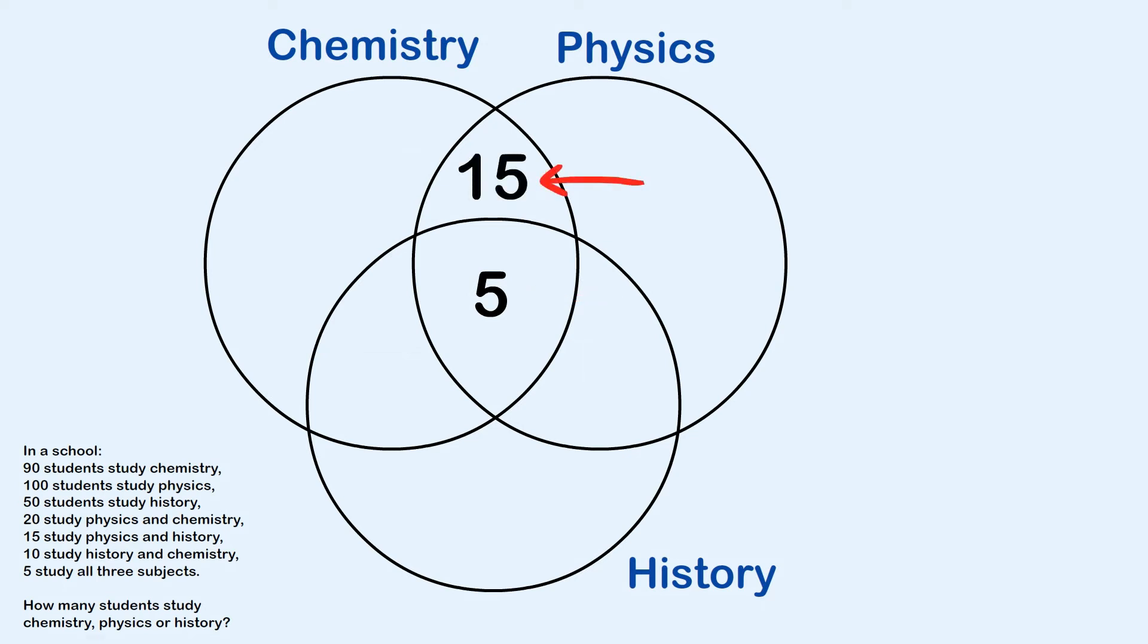And if we follow the same line of thinking, we have to put five here and 10 here. Now let's try and fill up the rest of chemistry. We know that there are 90 students that study chemistry, and we've already accounted here for 15 plus 5 plus 5, so that's 25. So 90 less 25 is 65, so we'll write 65 here.